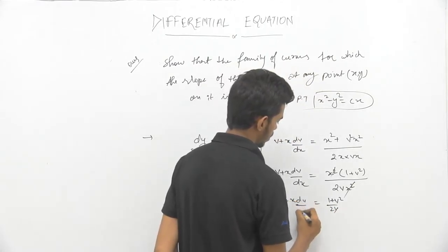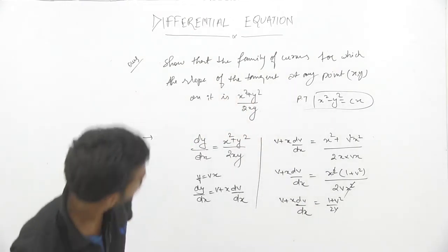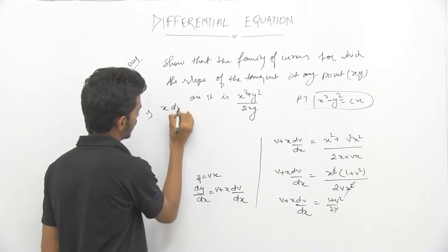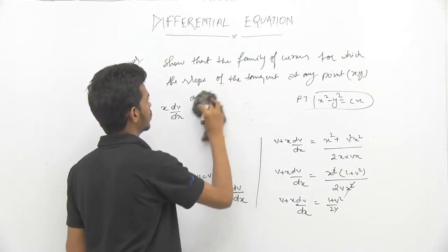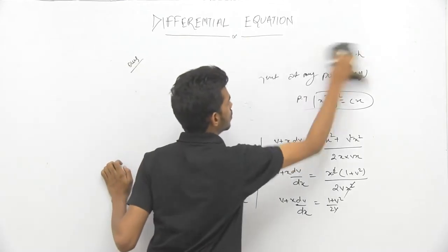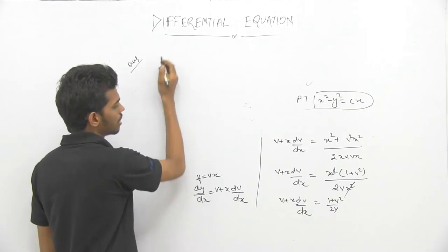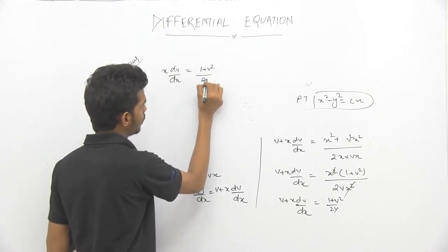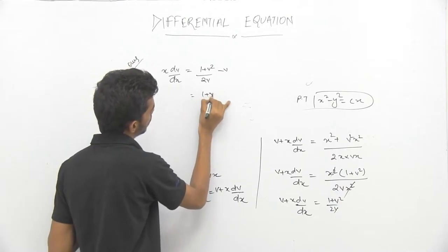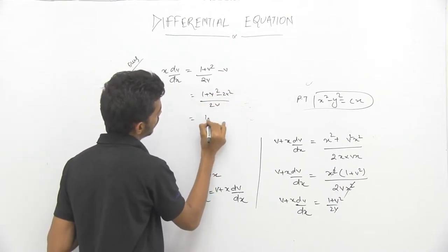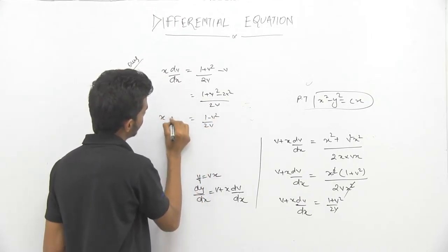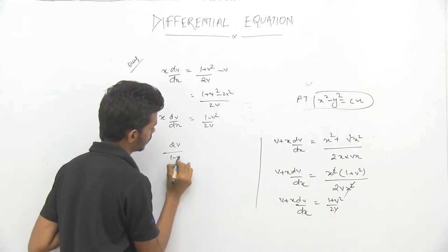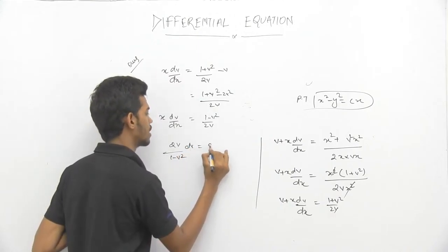So v + x·dv/dx = (1 + v²)/(2v). Solving further, x·dv/dx = (1 + v²)/(2v) - v, which gives (1 - v²)/(2v). So separating variables: 2v/(1 - v²) dv = dx/x.